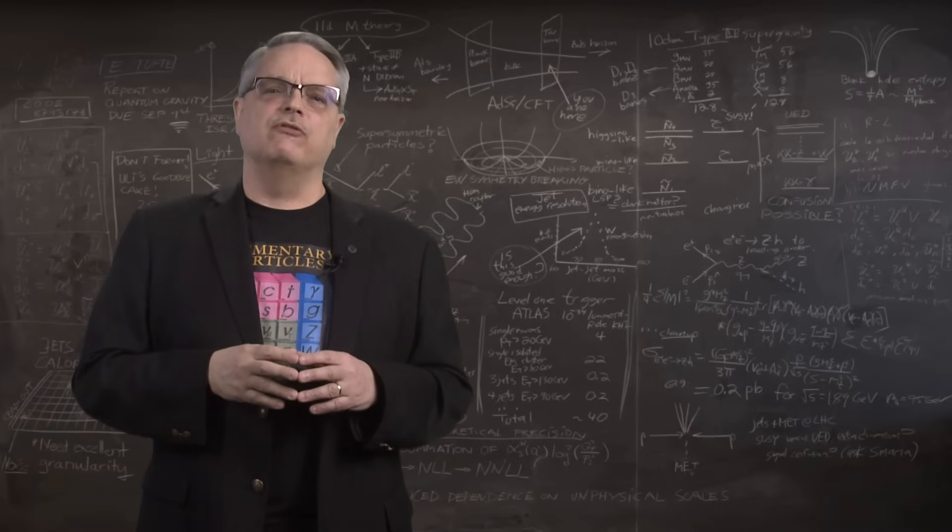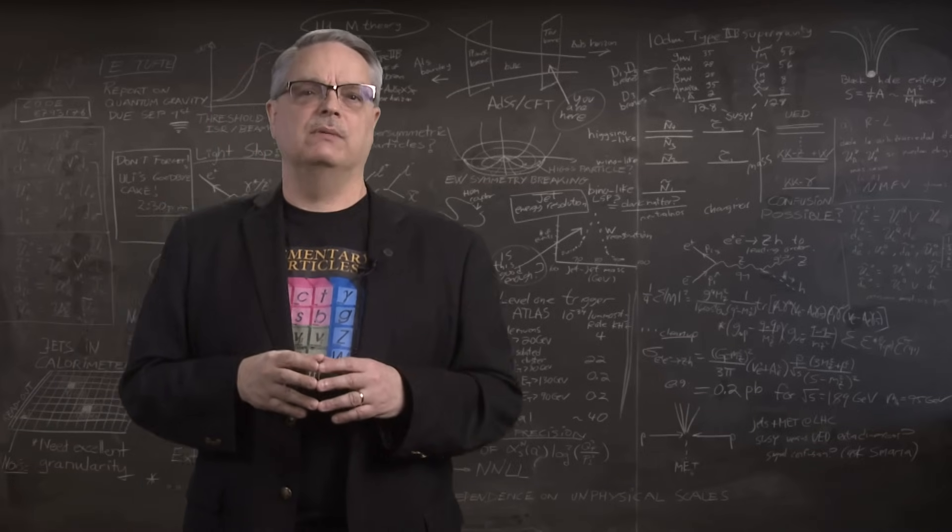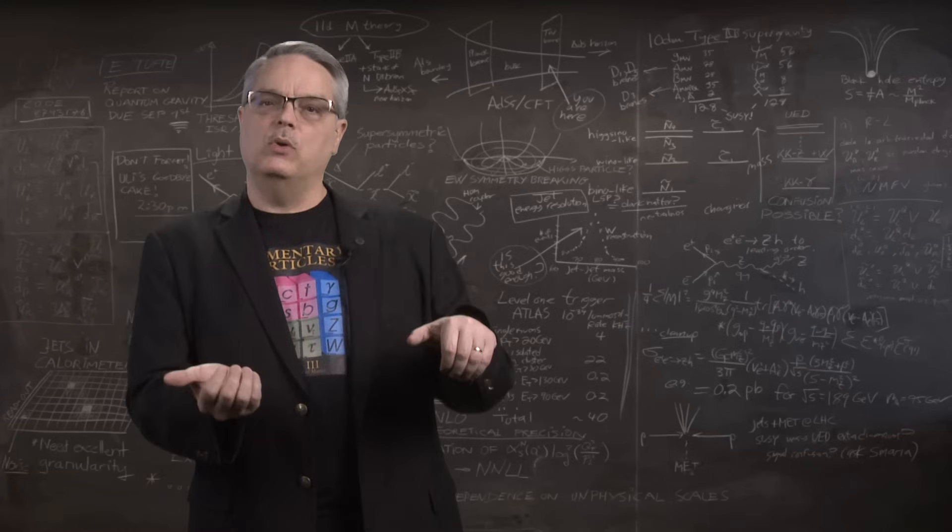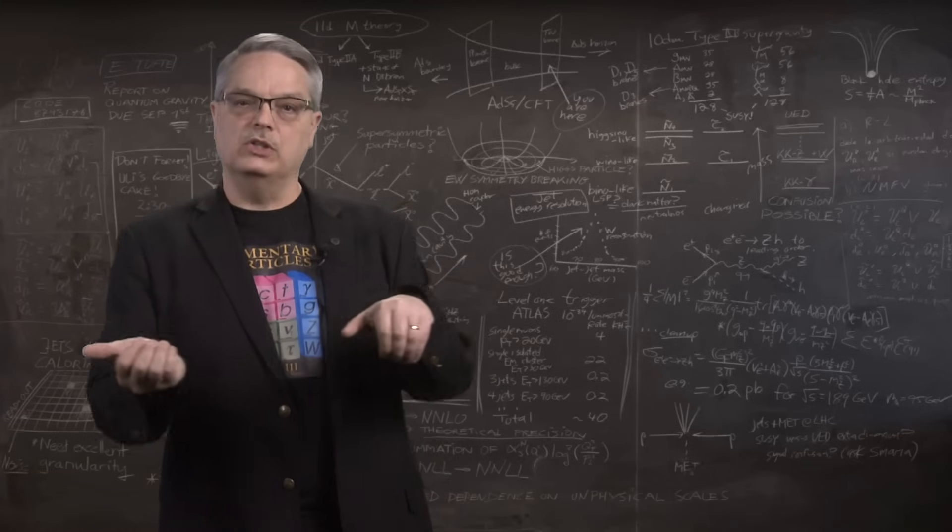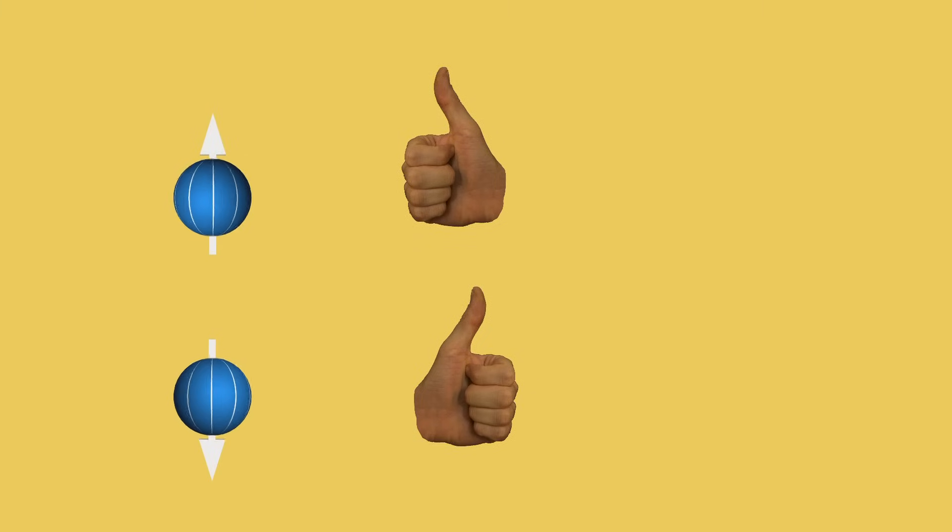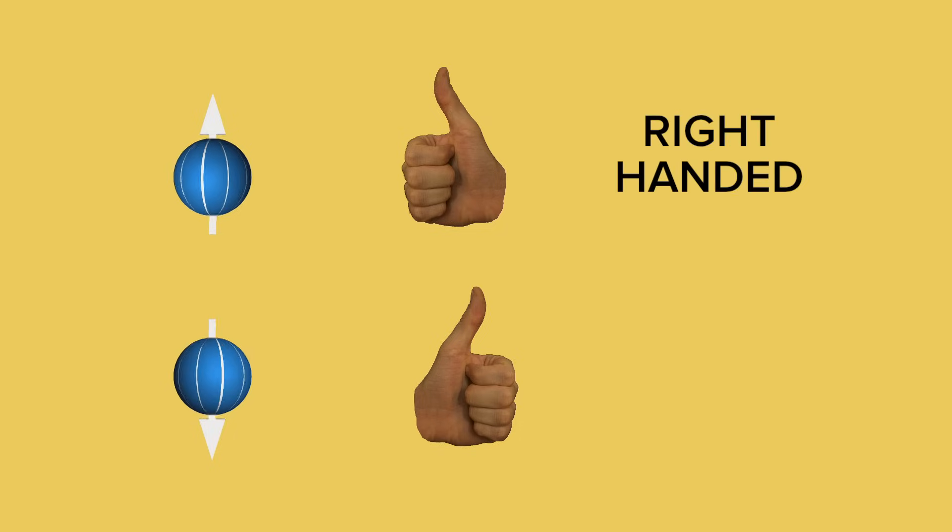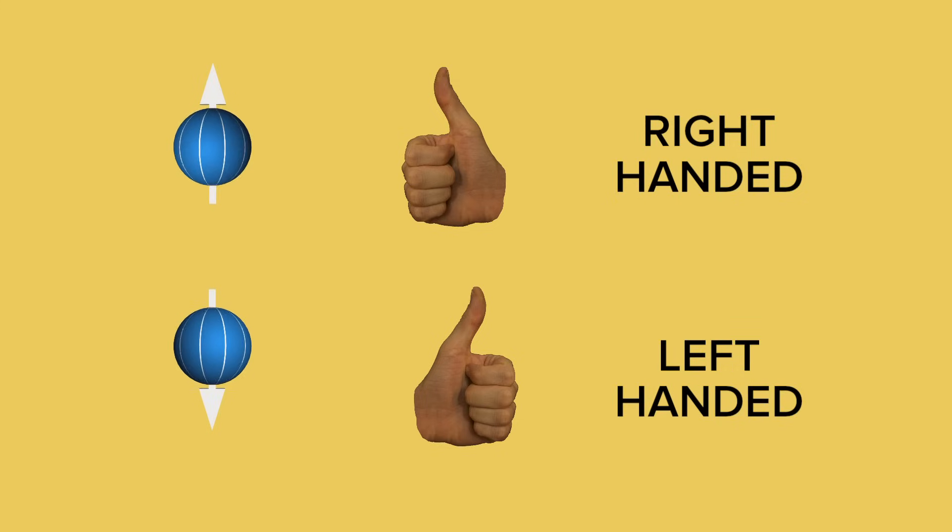We physicists have a jargon for this sort of situation using hands. Take both hands and point your thumbs in the direction a particle is moving. If the fingers of your right hand curl in the sense that the particle is spinning, we say that it's a right-handed particle. If the fingers of your left hand curl in the direction of spin, it's a left-handed particle. And you can see here how the right-left-handed jargon is related to the arrow method of labeling motion and spin directions.